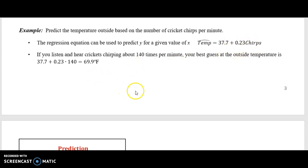If you listen and hear crickets chirping about 140 times per minute, you plug in 140 in for the word chirps, and you multiply it by 0.23, and then you add 37.7. So 37.7 plus 0.23 times 140 is 69.9 degrees Fahrenheit. When there are about 140 chirps per minute, you can predict that it's almost 70 degrees outside.